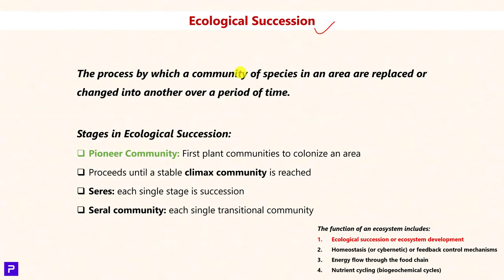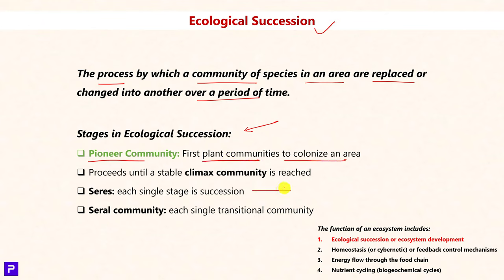Coming to the first topic: Ecological Succession. Ecological succession is a process by which a community of species in an area is replaced by a more advanced community of species over a period of time. The initial stage is dominated by pioneer communities — plant communities which are the first to colonize an area — and this continues until a climax community is reached, which is stable, mature, and does not facilitate formation of a new community. Each successional stage is called a 'sere' or successional stage, and each transitional community is called a serial community.